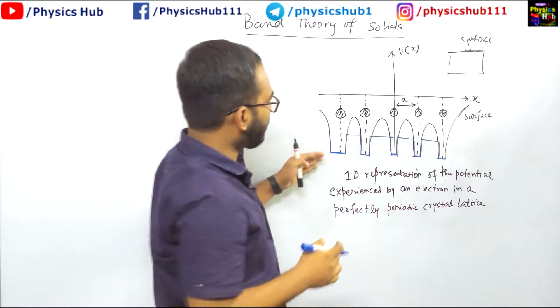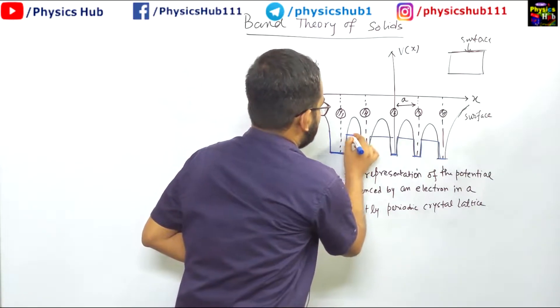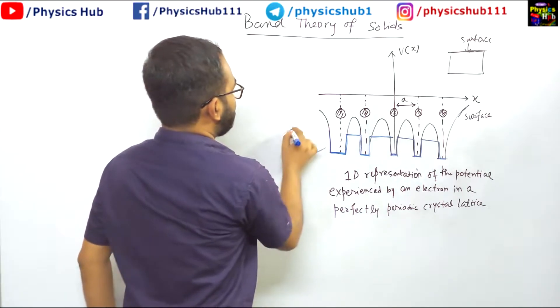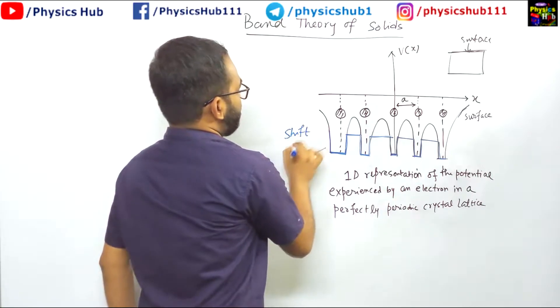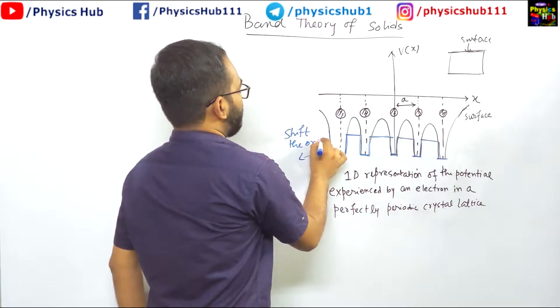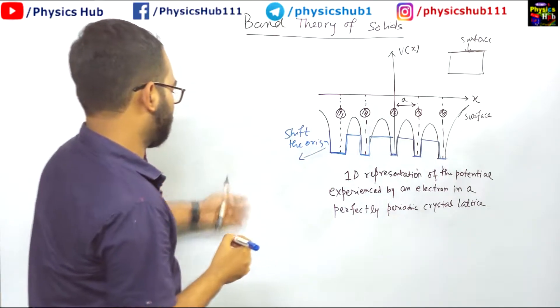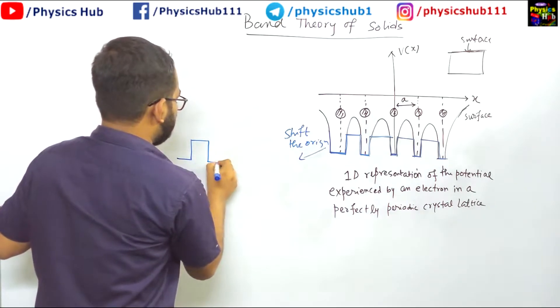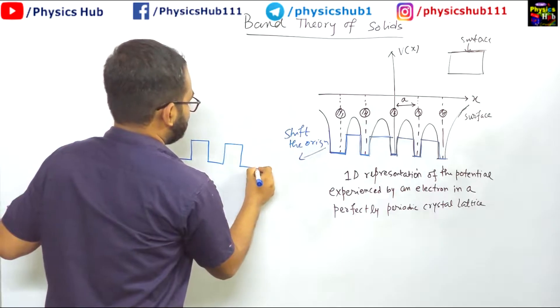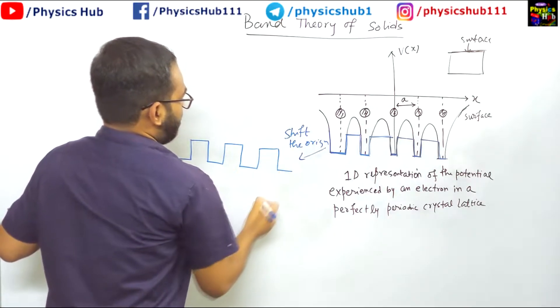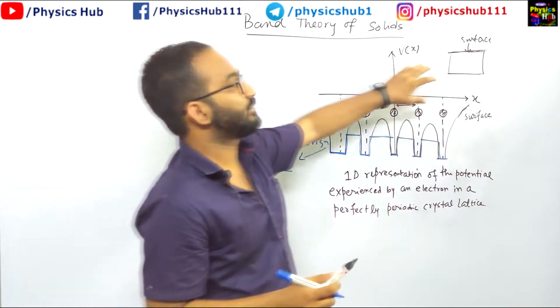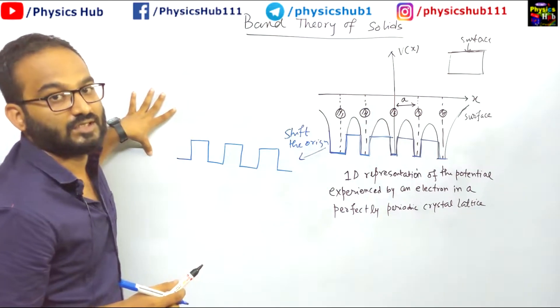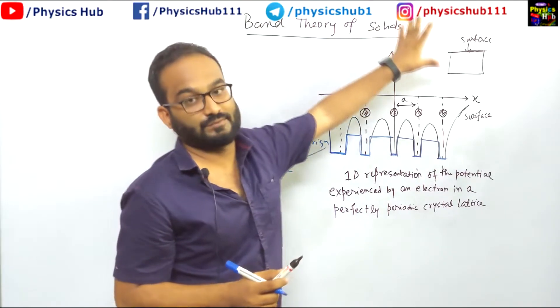Now you can see this is the potential of square type. Now we can also shift the origin. If we shift the origin, then we can get an approximate potential square well potential like this. And this approximation of the lattice potential by some periodic square well potential forms the basis of band theory of solids.